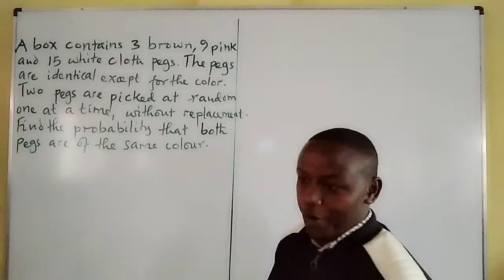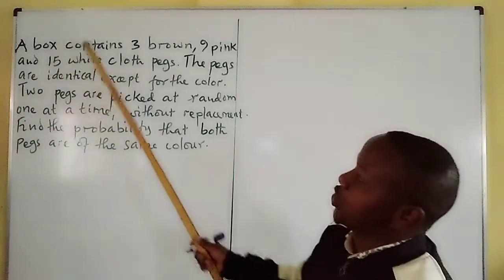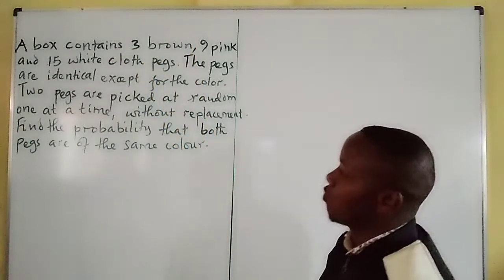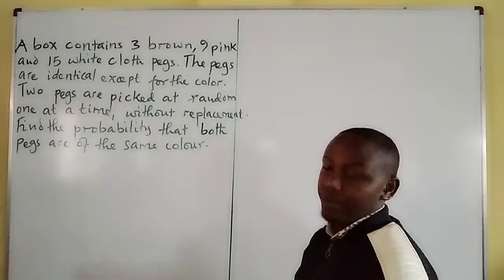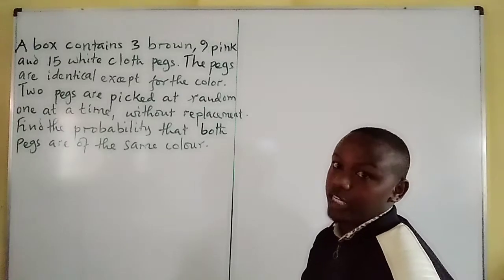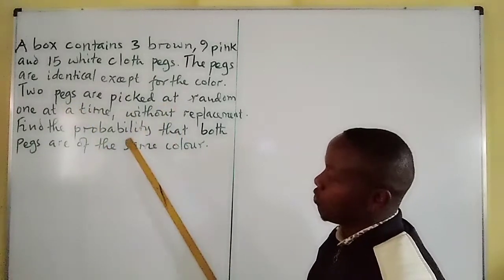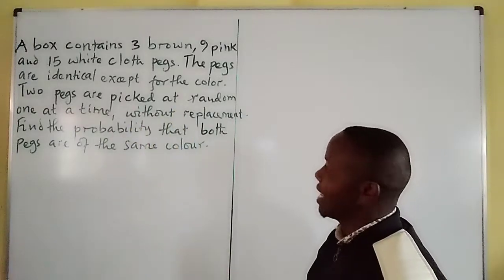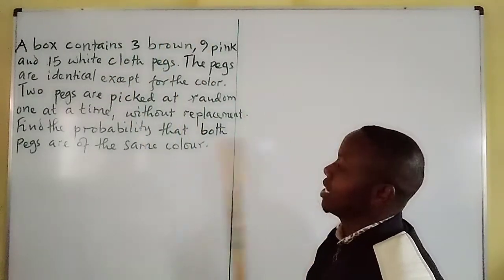In our case here, we are given a box containing three brown, nine pink, and fifteen white cloth pegs. The pegs are identical except for color, so when you are picking them you cannot sense which peg you are picking until you remove it and identify the color. We are told two pegs are picked at random, one at a time, without replacement.